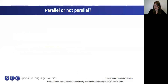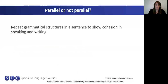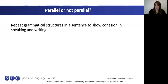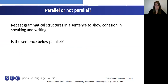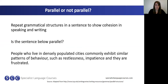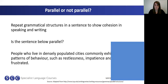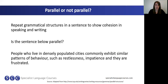Let's have a look at another example. Remember that we repeat grammatical structures in a sentence to show cohesion. Is the sentence below parallel? 'People who live in densely populated cities commonly exhibit patterns of behaviour, such as restlessness, impatience, and they are frustrated.' Is this an example of a parallel structure or not? Write your idea in the chat box.